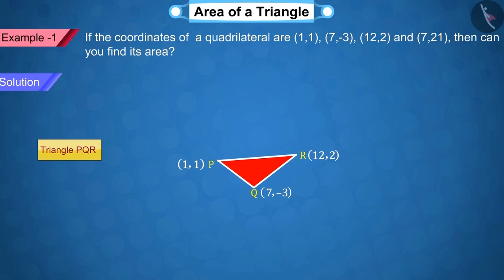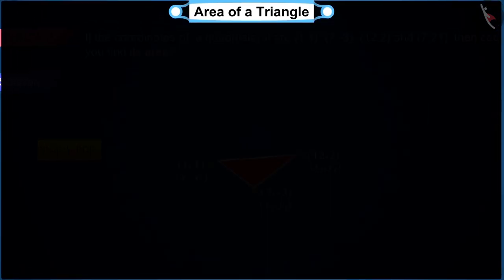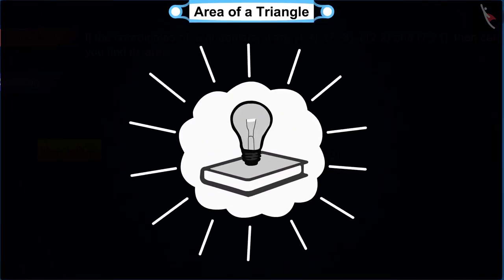Let's first observe the triangle PQR. Here, let's assume the coordinates of the point P as X1 equals 1, Y1 equals 1. The coordinates of the point Q as X2 equals 7, Y2 equals -3. And the coordinates of the point R as X3 equals 12, Y3 equals 2. Recall and state, how did we find the area of a triangle in such situation?